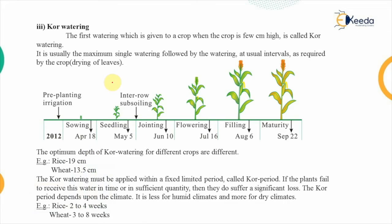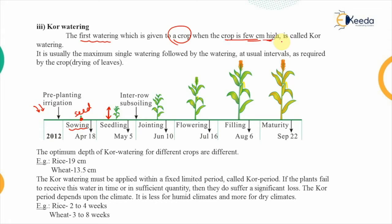Moving on to the next term: kor watering. In the growth stages of a particular crop, the seed is laid out at the sowing stage, at which point the pre-planting irrigation is done. When the seed becomes a plant and is a few centimeters high and has achieved a certain height, the first watering is provided to the crop. This first watering — when the crop is a few centimeters high — is known as the kor watering.